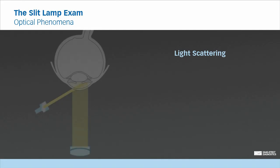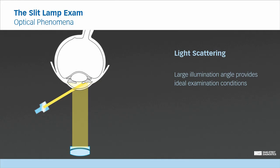Light scattering can best be observed when a large illumination angle is used. With a small illumination angle, the field where you can observe light scattering is restricted. Therefore, in most cases, you will create light scattering with an illumination angle of greater than 45 degrees.